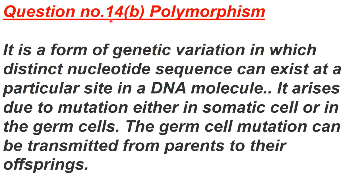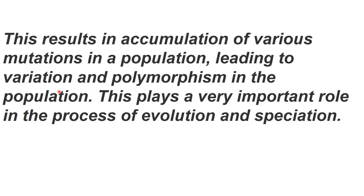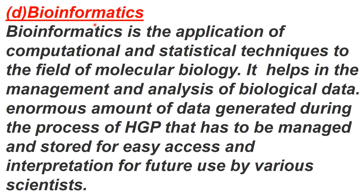Now discussing the answer to NCERT question 14 from the previous lecture — part B on polymorphism. Polymorphism is a form of genetic variation at the DNA level in which distinct nucleotide sequences can exist at a particular site in a DNA molecule. It arises due to mutation in somatic or germ cells. Germ cell mutations are transmitted from parents to offspring. Polymorphism results in accumulation of various mutations in a population, playing an important role in evolution and speciation.